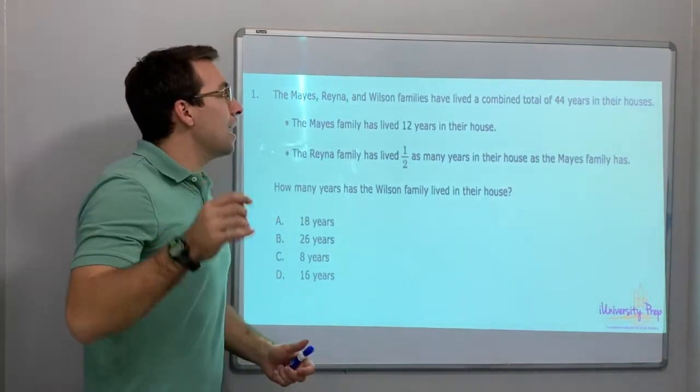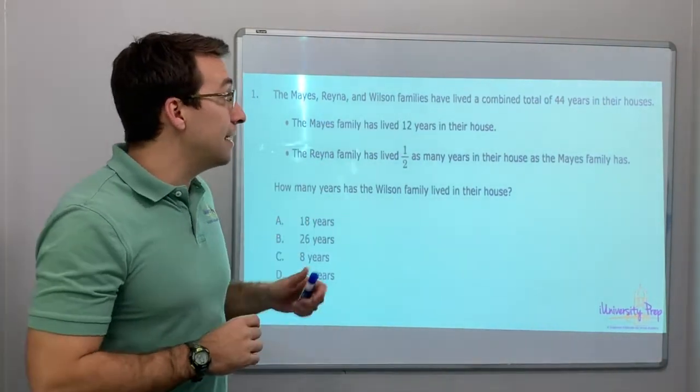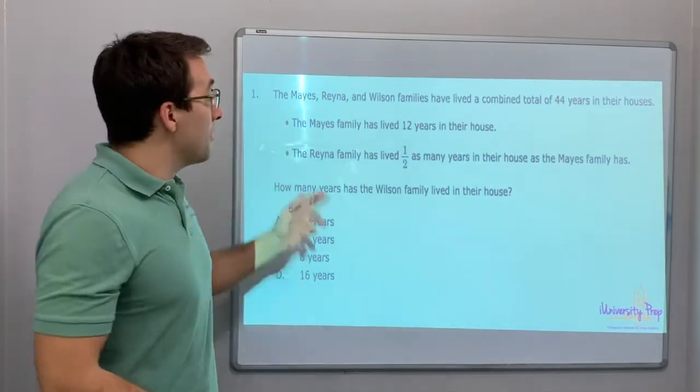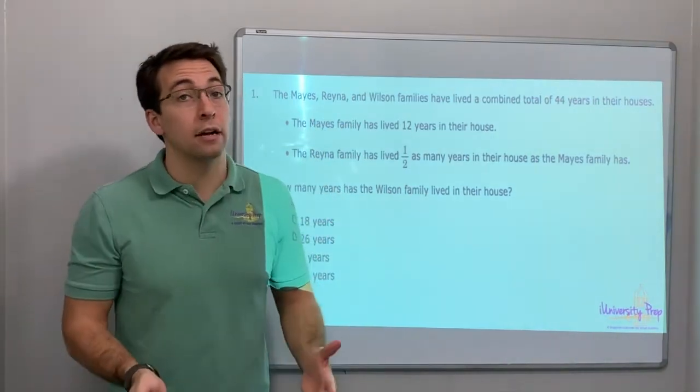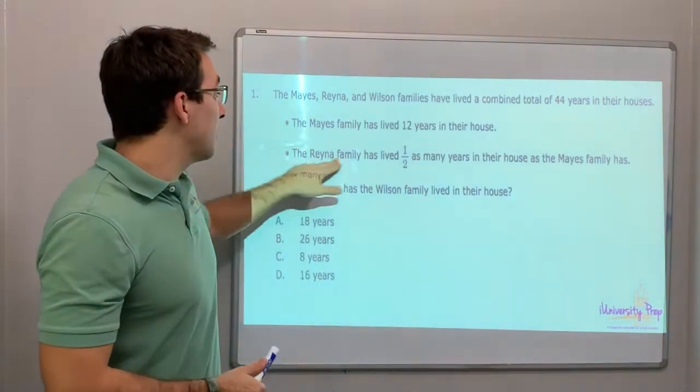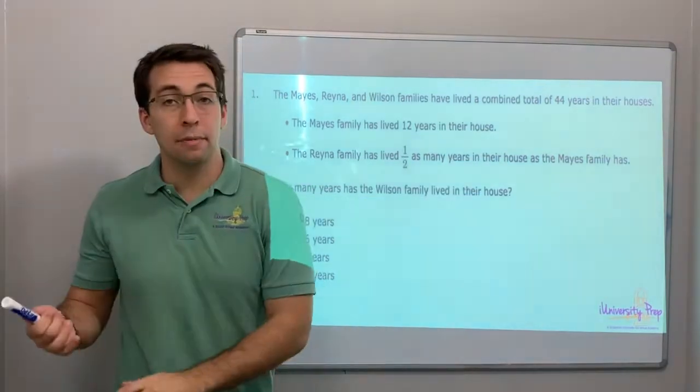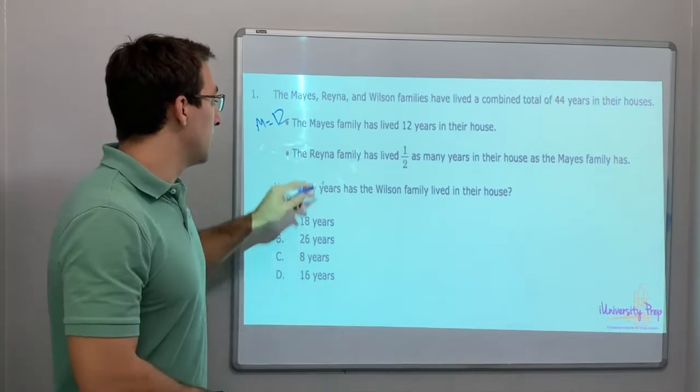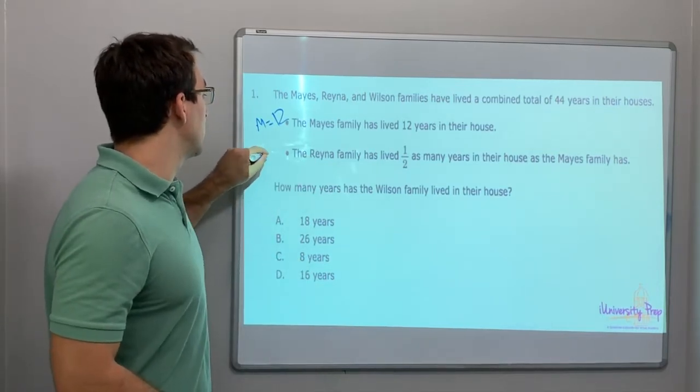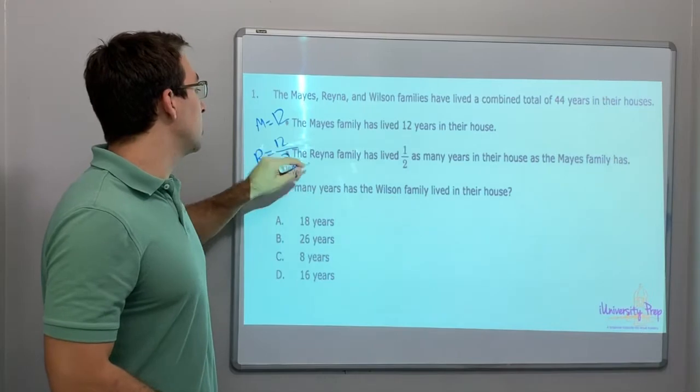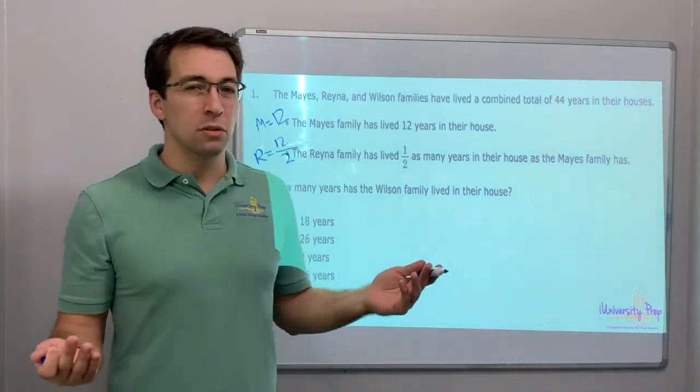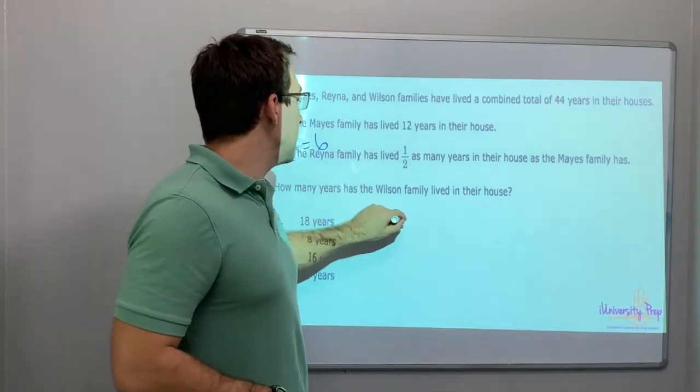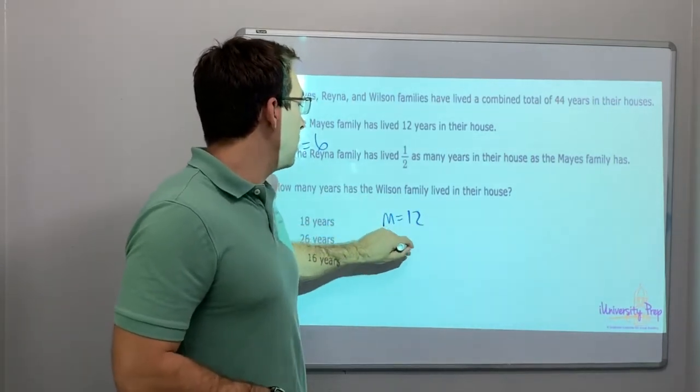The Maize, Reina, and Wilson families have lived a combined total of 44 years in their houses. The Maize family has lived 12 years in their house. The Reina family has lived half as many years in their house as the Maize family. Let's stop there. Maize equals 12. Reina equals 12 divided by 2. What's 12 divided by 2? That equals 6 years. So Maize equals 12, Reina equals 6.